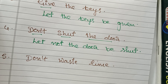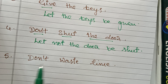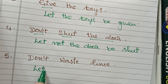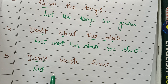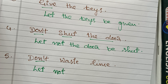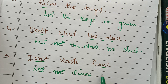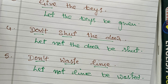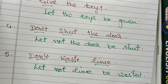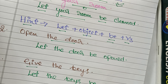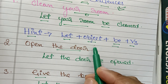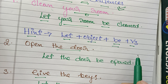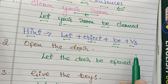Fifth one: 'Don't waste time.' Again use 'let.' It is in the negative form, so use 'not.' The object is 'time.' Answer: 'Let not time be wasted.' It's all very simple. All you have to remember is: Let + object + be + V3.